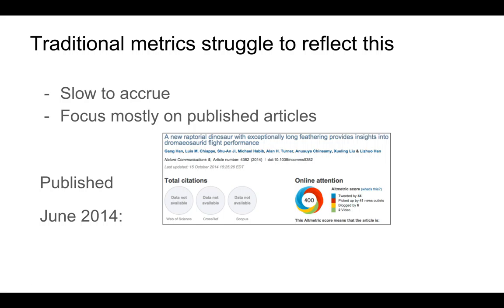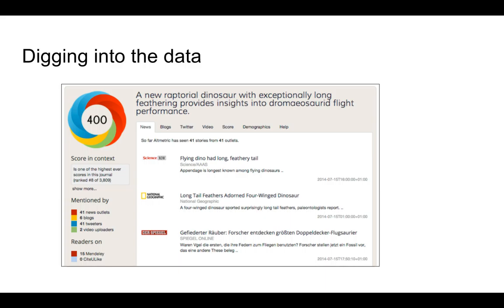Why altmetrics came about: with traditional metrics and citations, we found they were very slow to accrue. We can see a paper here about a dinosaur that has no citations on Web of Science, Crossref or Scopus, but it's been picked up by 41 news outlets, tweeted by 44 people, blogged by six people, and there are two videos. That is very good, quick feedback — we can drill into it and see the news sites covering it: Science Now, National Geographic, Der Spiegel in Germany. This shows research is getting out there beyond the university and institution.